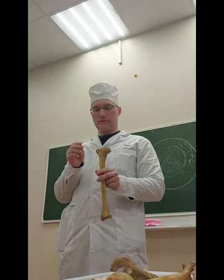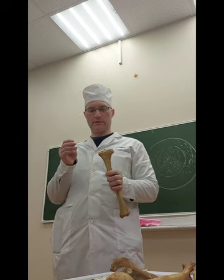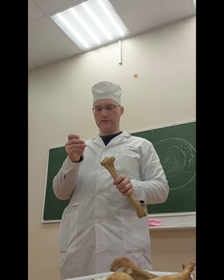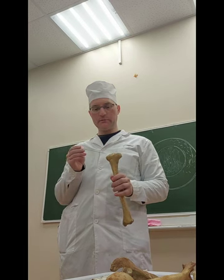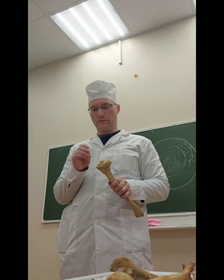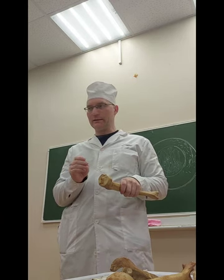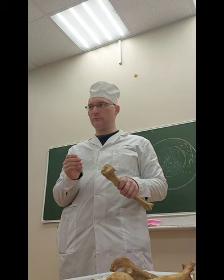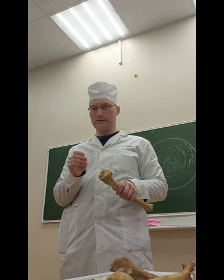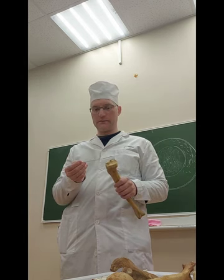This is the superior end, extremitas superior; inferior end, extremitas inferior. On the superior end we have epiphysis — two condyles: condylus medialis, condylus lateralis. Between condyles we have an elevation, eminencia intercondylaris. On the eminence we have two tubercles: tuberculum laterale, tuberculum mediale. Behind and in front of the eminence we have areas: area intercondylaris anterior, area intercondylaris posterior. All of this is the superior articular surface — facies articularis superior.